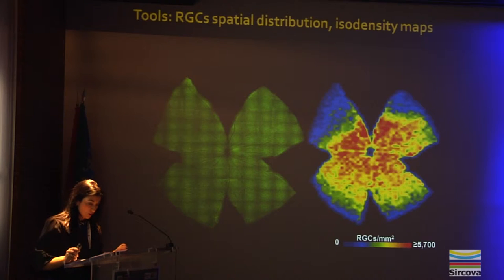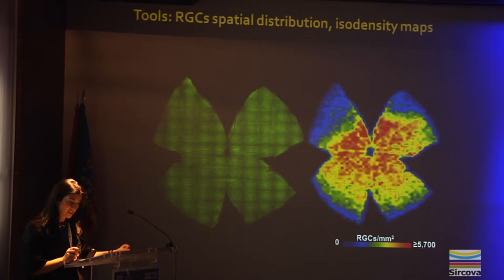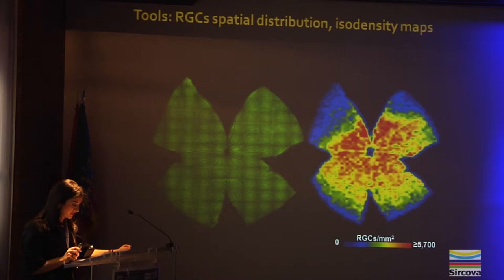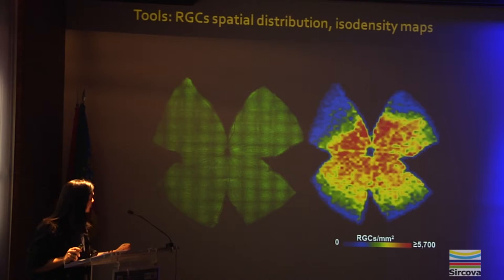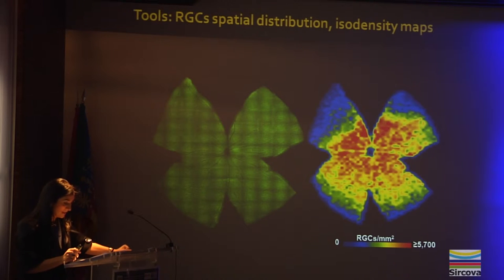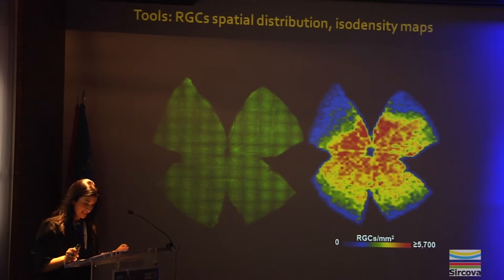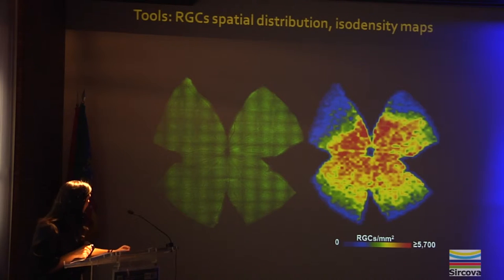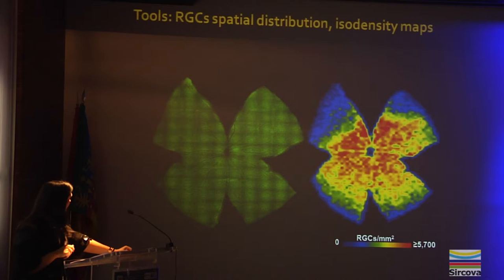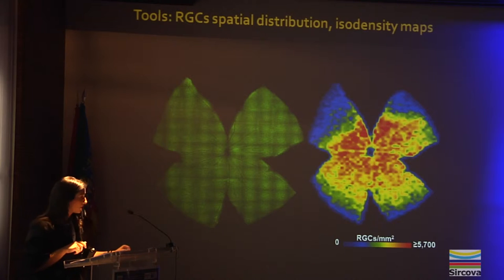Once we know the number of ganglion cells, it is important to know their distribution in the retina. For this, we use an isodensity map. In this map, retinal ganglion cell density is expressed by a code of increasing color — from low densities represented by cool colors to high densities illustrated with warm colors. In this slide, we can see a photomontage of a mouse retina showing BRN3A positive ganglion cells, and to the right, the corresponding isodensity map.